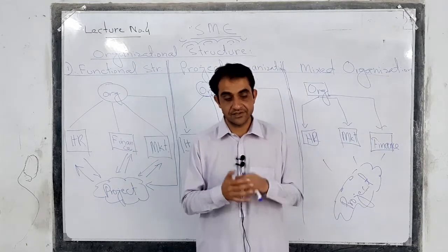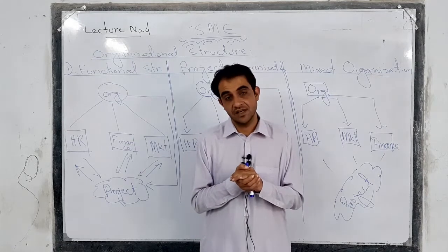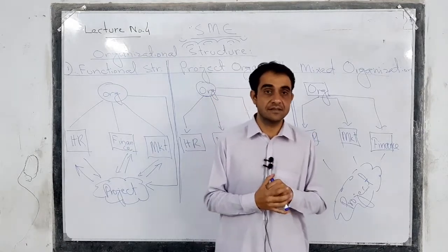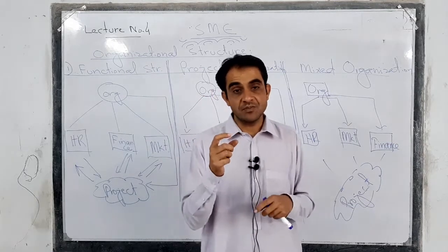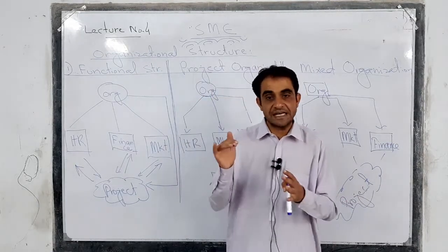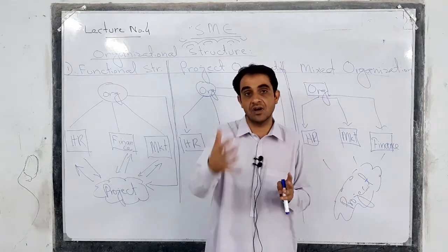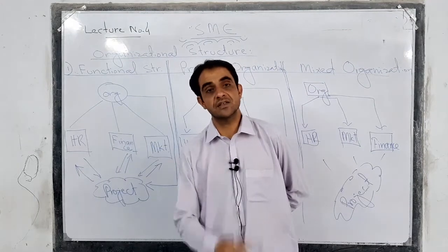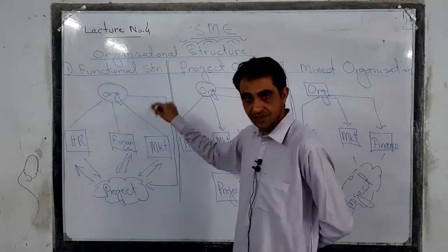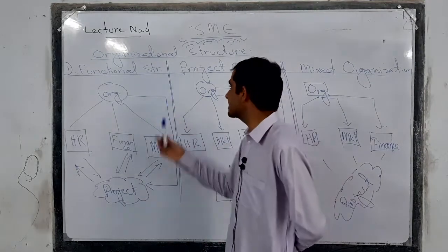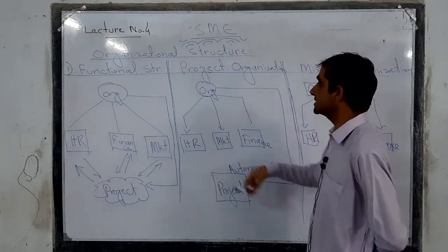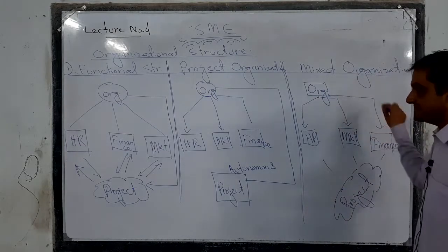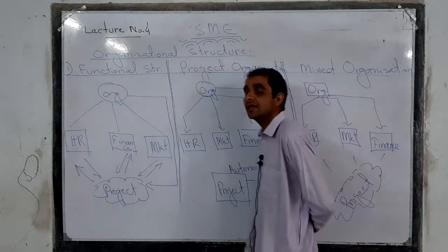There are many classifications of organizational structures. One classification includes horizontal structure and vertical structure, but today our topic is about how different activities are arranged in the organization. In this regard, we have three types: number one, functional structure; number two, project organization or project structure; and number three, mixed organization.